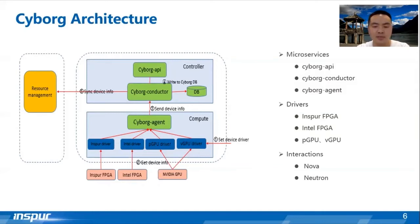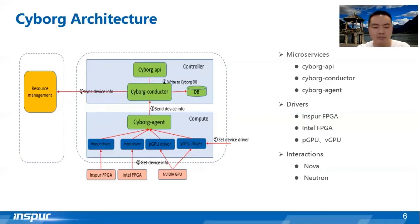Placement stores the resource information and provides available resources for Nova scheduling when a server is created. The CYBOG API service provides interfaces to request accelerator resource information. Currently, we have completed Nova and CYBOG interaction and support PTPO, VTPO, and FPGA accelerator devices. In the Factory release, we have introduced the NIS Pro FPGA and the Intel Arria 10 device support. In the Ussuri release, we plan to introduce NVMe SSD support, and in the future we will support managing SmartNIC. We have submitted the SmartNIC design specification to the Nova team and will discuss it at this Victoria PTG.